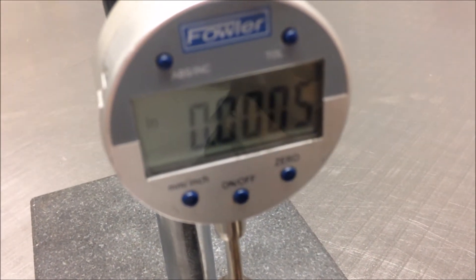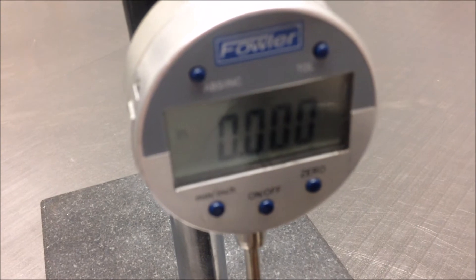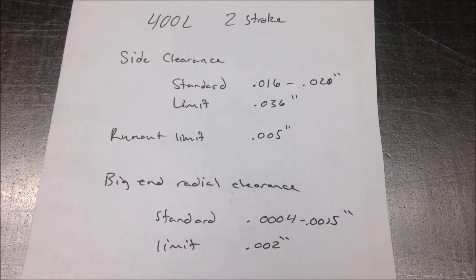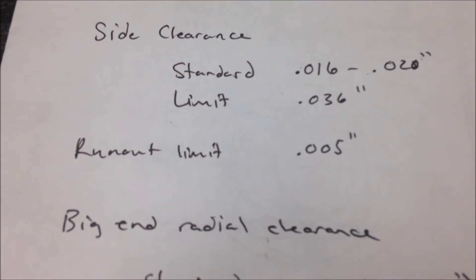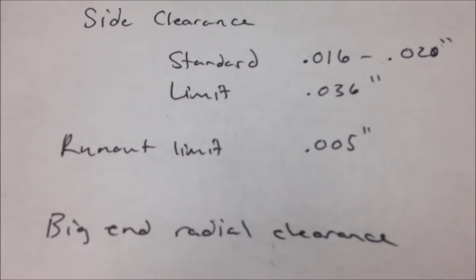You'll want to make one full revolution. As you can see, we went up to about one thousandth of an inch. The run-out limit is five thousandths.